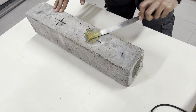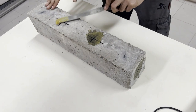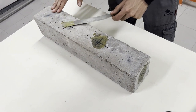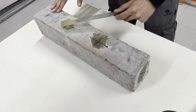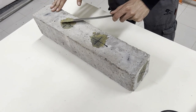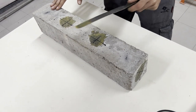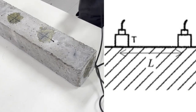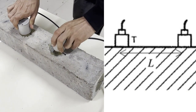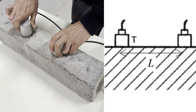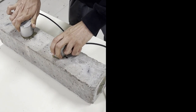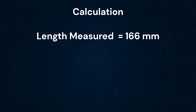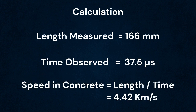In indirect mode, the receiver and the transducer are placed on the same surface. The direct length between the transducer and the receiver is 166 mm. We would calculate the speed of ultrasonic waves in concrete using the distance measured and time observed. The calculated velocity is 4.42 km per second.